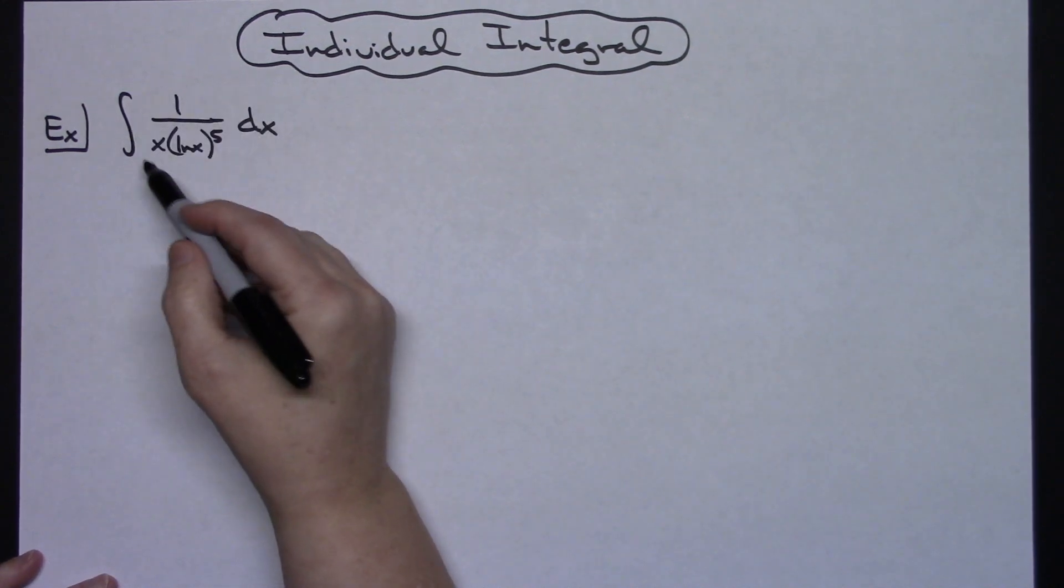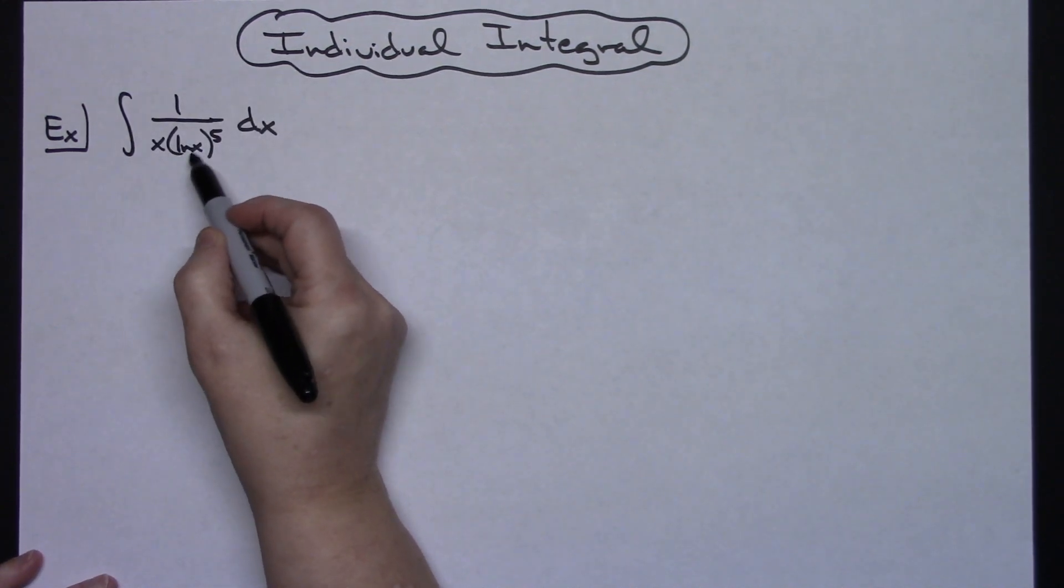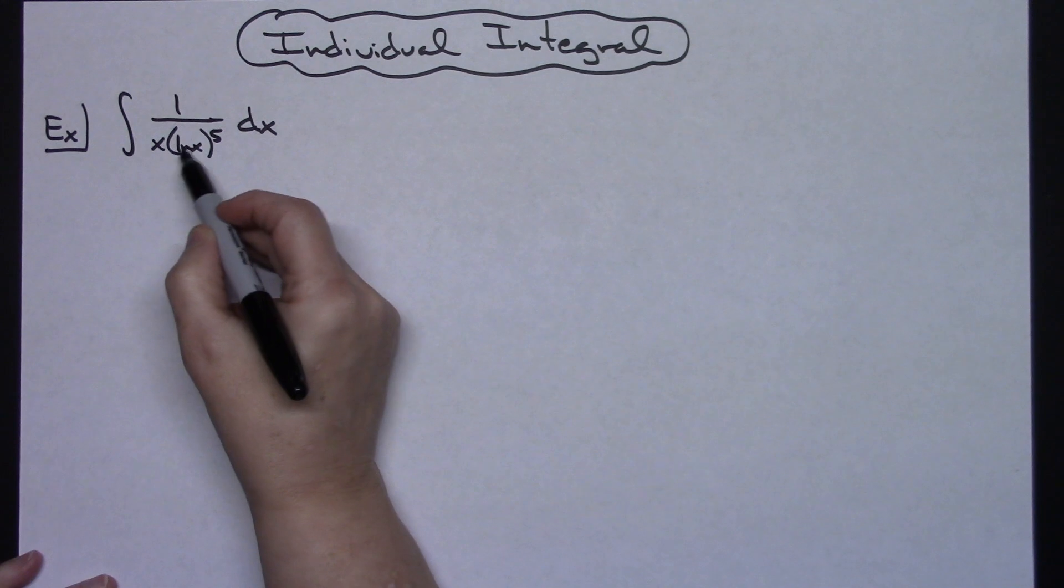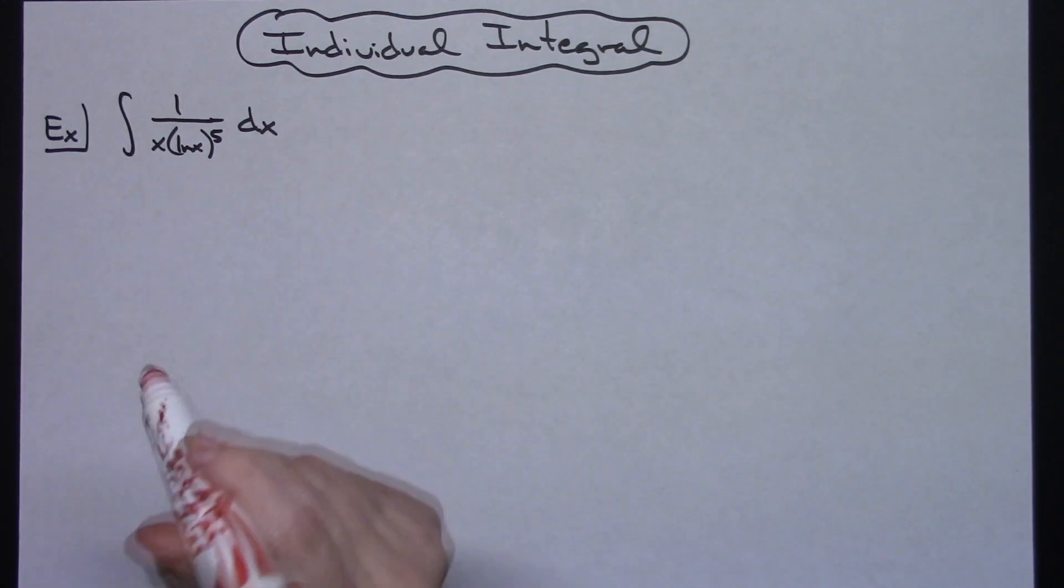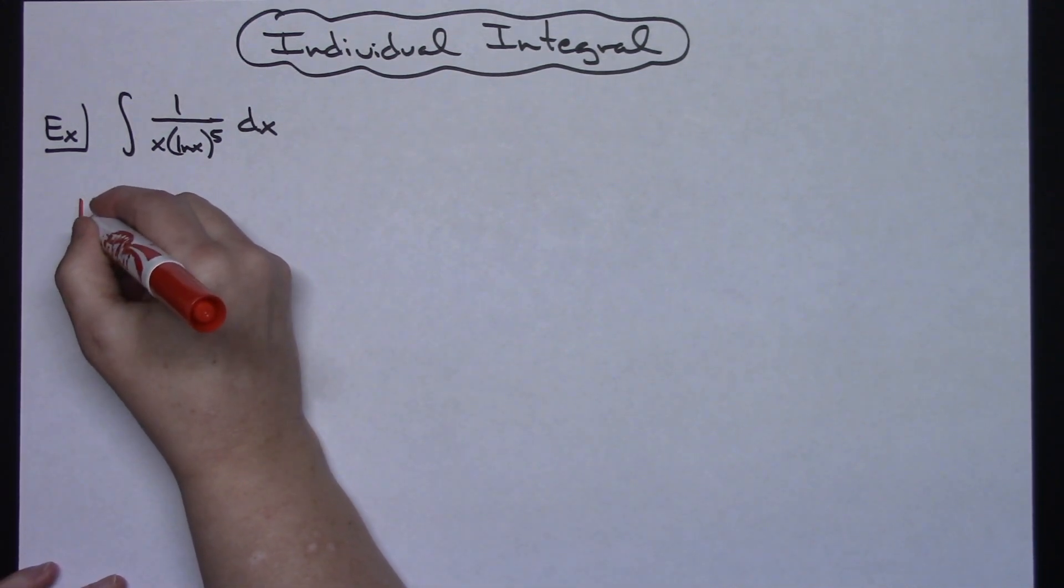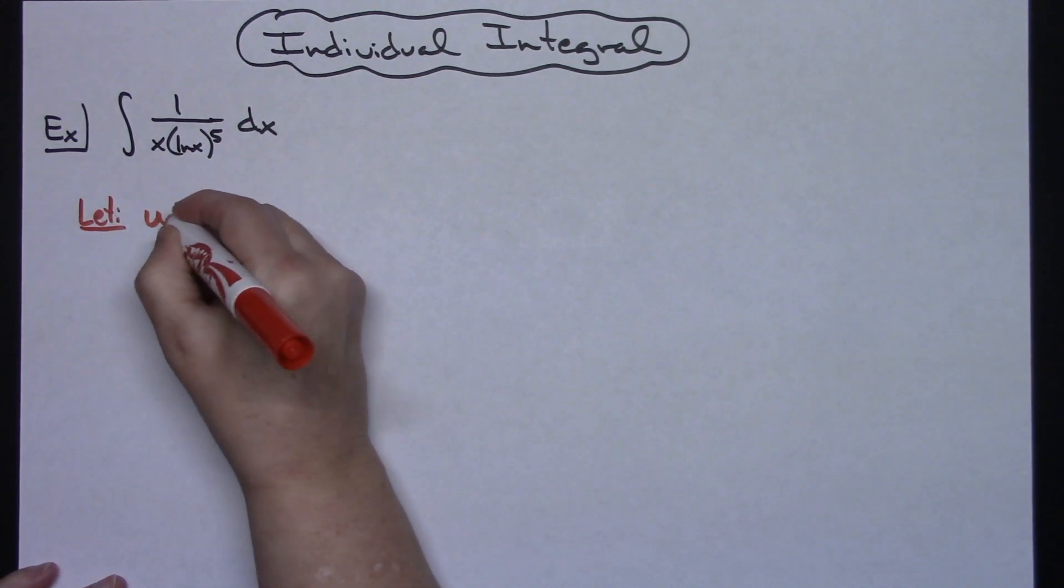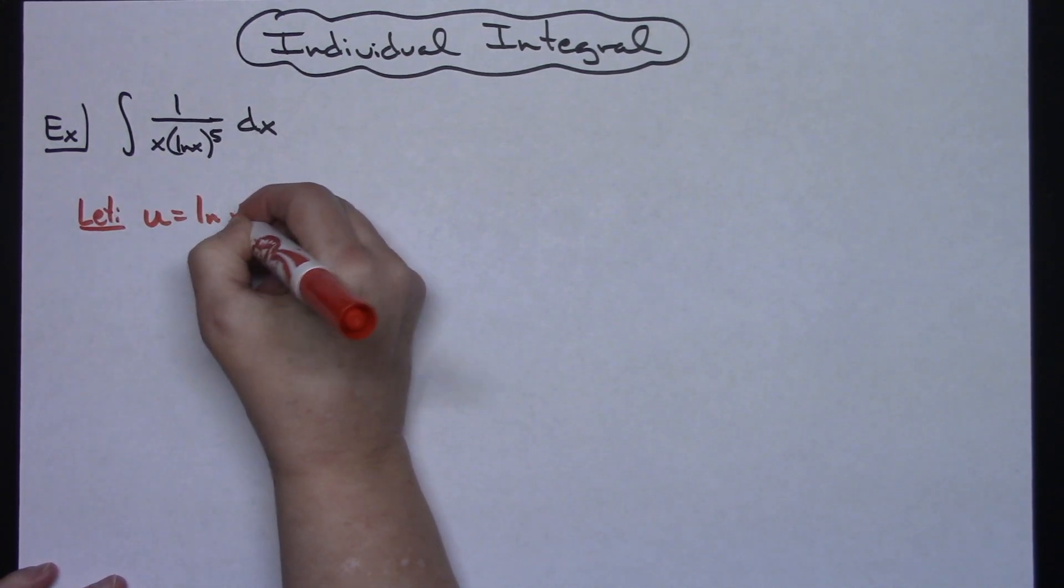So I'm going to take a look at this integral right here and I'm going to look for the innermost part of the function. That's going to be that natural log of x right there. So there's where I'm going to let my u be. So I'm going to let u equal natural log of x.